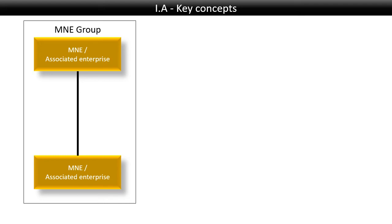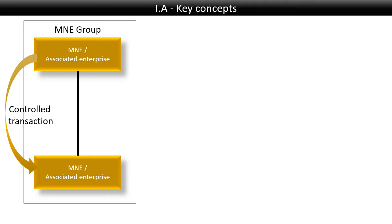Let's round up with a couple of key concepts so we are clear about everything. Let's say we've got an M&E group with two associated enterprises. Now if they buy and sell services or goods to each other, this is what we call a controlled transaction. And this is what we need to compare to uncontrolled transactions to know whether the pricing is the right price.